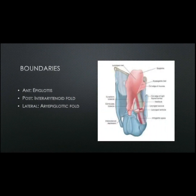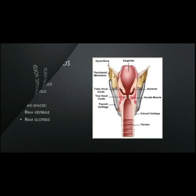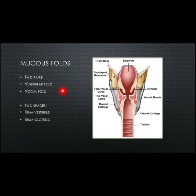Next are the boundaries. Anteriorly is the epiglottis, which is a leaf-shaped cartilage. Posteriorly is the interarytenoid fold. Laterally is the aryepiglottic fold along the margins of the epiglottis.